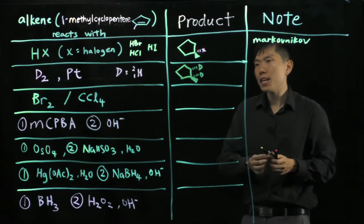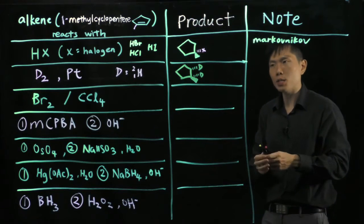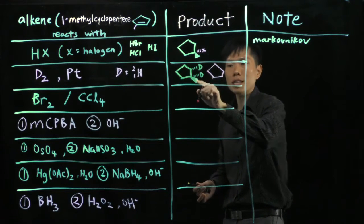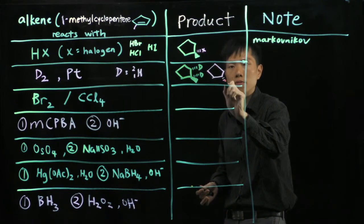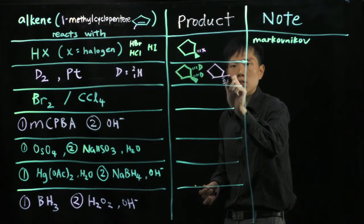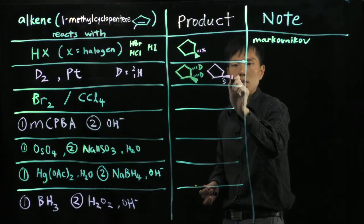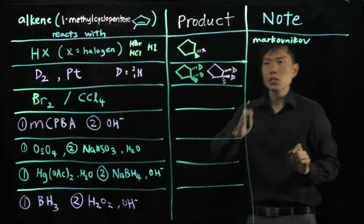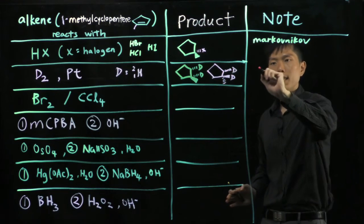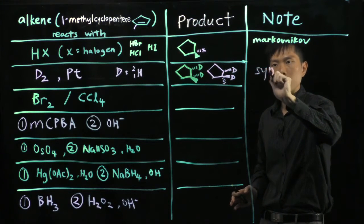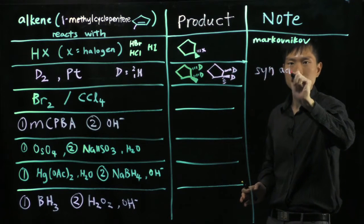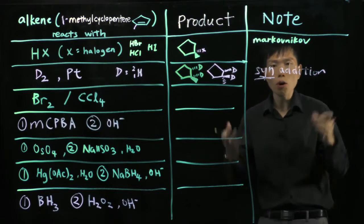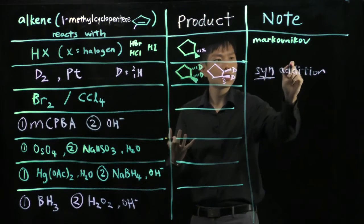Now in this case, it is possible for you to draw the other isomer in which the methyl group now points down, and then the two deuteriums will point up. So the note here will be it is a syn addition. Take note, syn addition. Both incoming atoms coming from the same side.